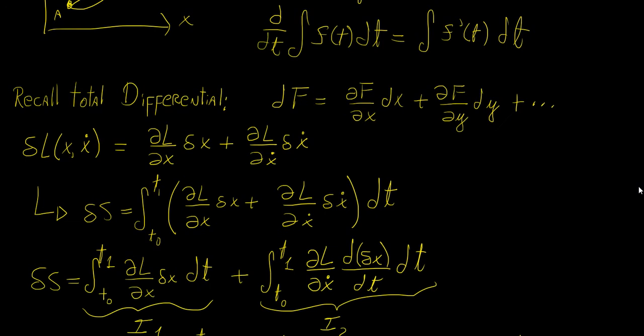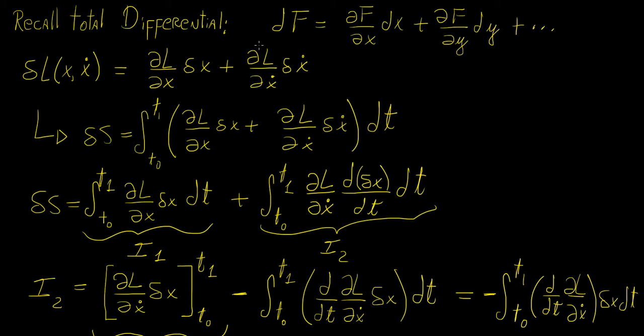So recall that the total differential of a function of several variables is defined as follows. So we're going to take the partial derivatives with respect to each of the variables and then we're going to multiply them by some infinitesimal quantity with respect to that variable. So if the function has three variables, we do it three times. If it has four, we do it four times and so on.